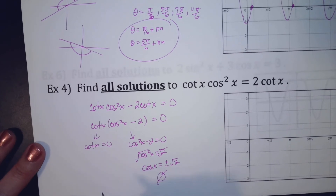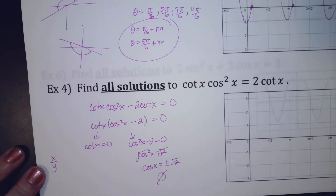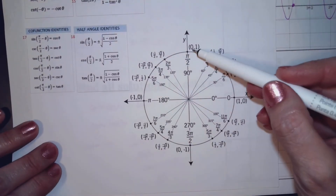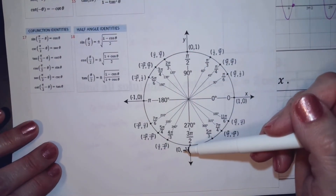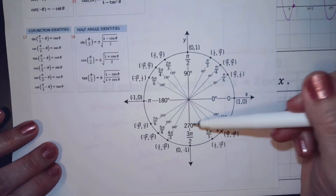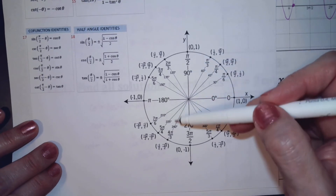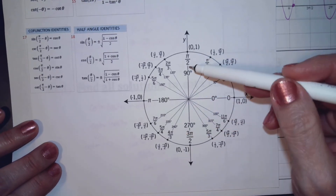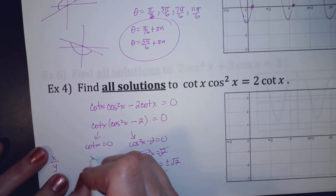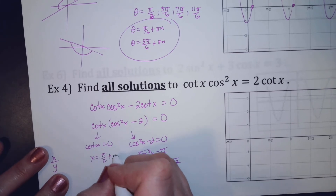But cotangent equals 0. Tangent is y over x, so cotangent is x over y. I need a place where the x value is 0 and the y value can be anything — that's here and here. The period of cotangent is pi, so I'll say pi over 2 plus every pi·n after that, going over and over for all time.